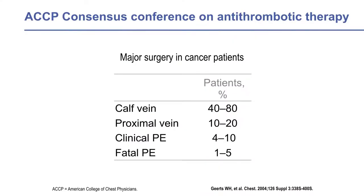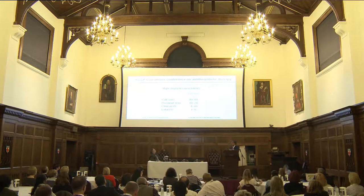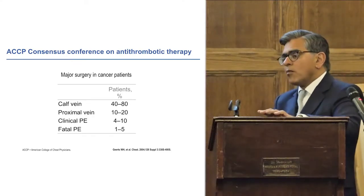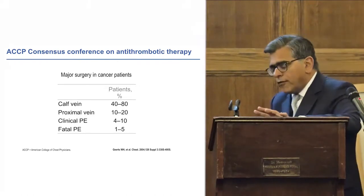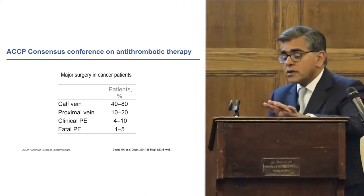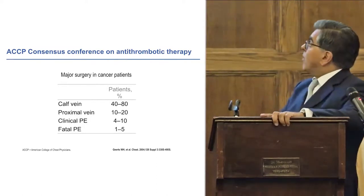Going back historically to data in the perioperative period in surgical patients undergoing laparotomy for abdominal or pelvic malignancy, without thromboprophylaxis and looking at both asymptomatic deep vein thrombosis detected by fibrinogen scanning or venography, and symptomatic disease, the reported frequency of thromboembolic complications was high. Calf vein thrombi were seen in 40 to 80%, with clinical rates of pulmonary embolism between 4 and 10%, and fatal PE rates of 1 to 5% in autopsy-controlled studies.